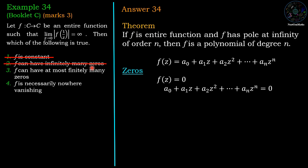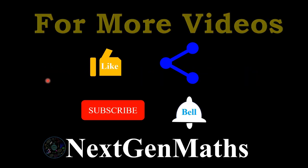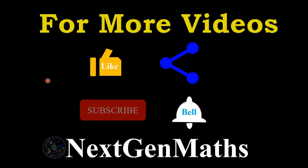So the second option, which is f can have infinitely many zeros, is wrong. Third option: f can have at most finitely many zeros - that is correct. And the fourth option: f is necessarily nowhere vanishing - which is wrong. So third option is correct.